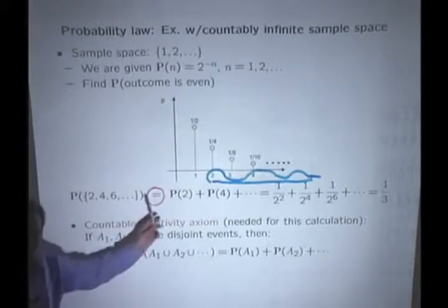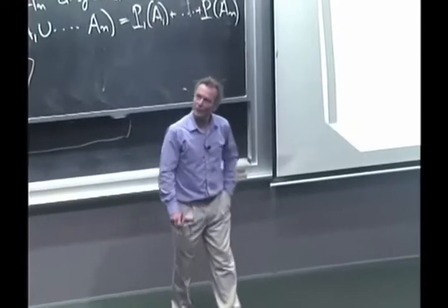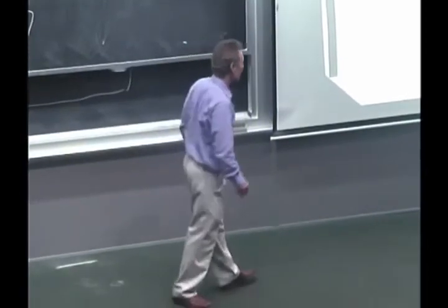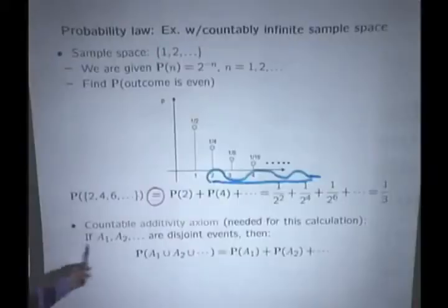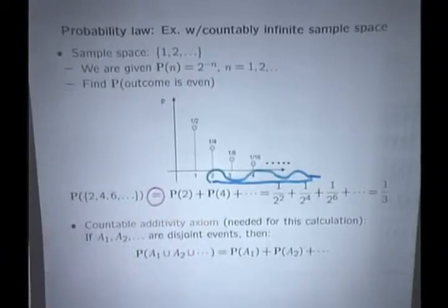And this is the countable additivity axiom, which is a little stronger or quite a bit stronger than the additivity axiom we had before. It tells us that if we have a sequence of sets that are disjoint and we want to find their total probability, then we are allowed to add their individual probabilities.